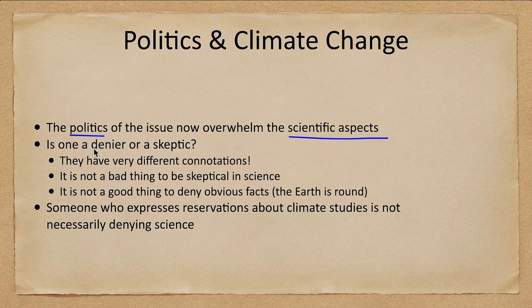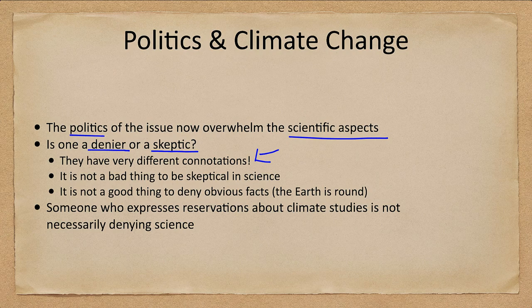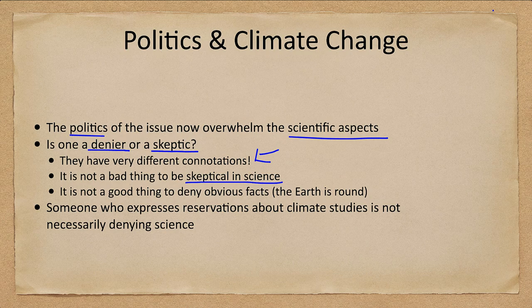People are sometimes called deniers of climate change. There's a difference between being a denier and being a skeptic. A denier denies science outright, while a skeptic questions something without necessarily denying it. To be fair, it is not a bad thing to be skeptical in science — we should question everything and challenge all of these models and push them to be the best they can be.